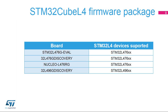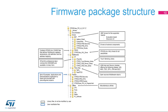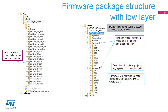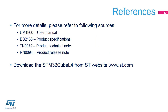STM32 Cube L4 features a rich set of examples and applications at all levels, making it easy to understand and use any HAL driver and/or middleware component. These examples run on the ST development boards listed in this table. The STM32 Cube L4 firmware solution comes in a single zip file, having the structure shown in this slide for all STM32 series. The STM32 Nucleo board supports these examples of low-layer drivers.